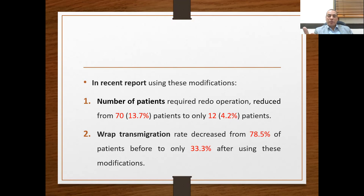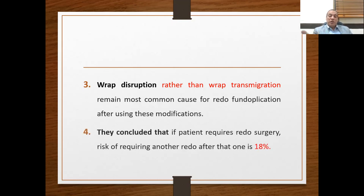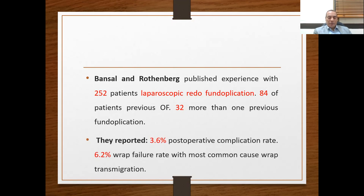Using these modifications, the number of patients requiring redo fundoplication was obviously reduced, and RAP transmigration rate was also obviously reduced. RAP disruption remains the main cause of redo, while RAP transmigration decreased after using these modifications. The risk of requiring additional redo surgery after the first redo is decreased. A published experience with 25 laparoscopic redo fundoplications reported RAP failure with transmigration as the most common cause.